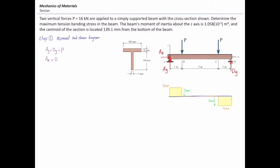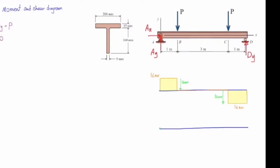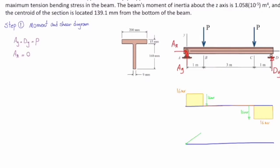The next step is to determine the moment diagram. The moment at point A is zero. From point A to B, the moment is increasing because the shear force is positive. The magnitude of bending moment at point B equals the area under the shear diagram from A to B, which is 16 kN times 1 m, giving 16 kN·m. The moment is constant from point B to C because the shear diagram is zero, meaning there is no change in the moment diagram.